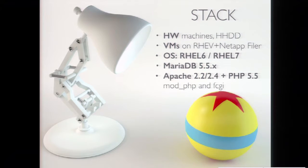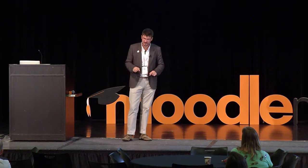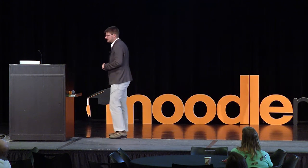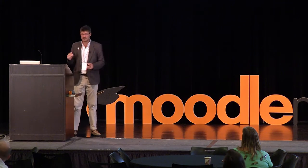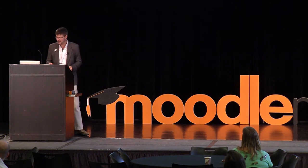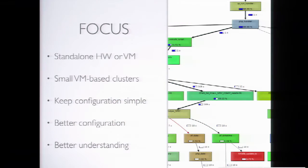If anybody here is using Nginx, the performance profile of using Apache with ModFastCGI is very similar to using Nginx. It's been based on MariaDB 5.5 and recent versions of PHP. The focus was on relatively simple configurations, looking at how a straightforward one-machine configuration or a small cluster running in a virtualized environment will perform with different configurations of the Moodle Universal Cache.